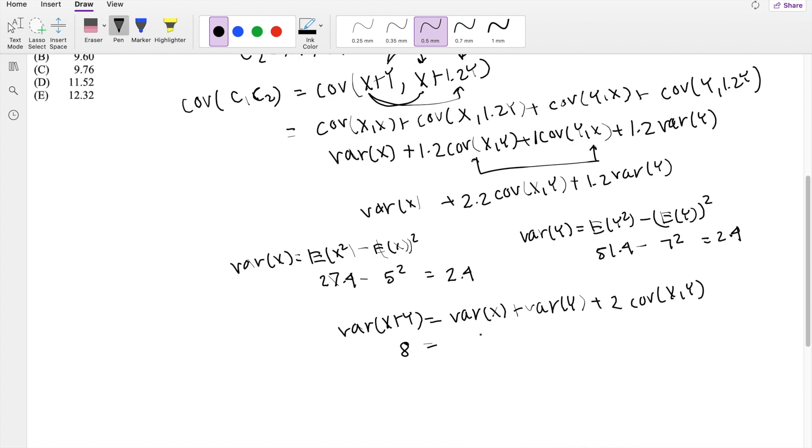So 8 is equal to variance of X, which is 2.4, plus variance of Y, which is 2.4, plus 2 times the covariance of X and Y.